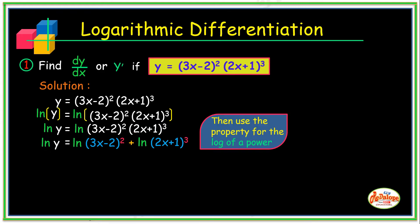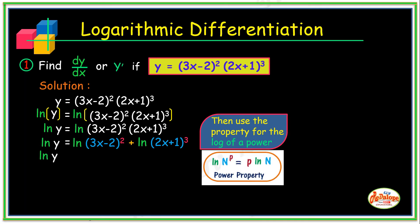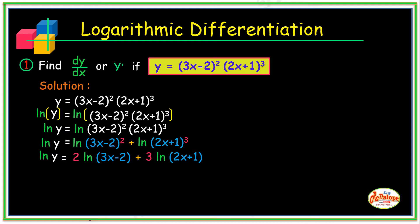Now we apply the property for the logarithm of a power, since the right-hand member contains the power of 2 and the power of 3. Applying it on the right side, ln(y) is equal to 2·ln(3x - 2) plus 3·ln(2x + 1).